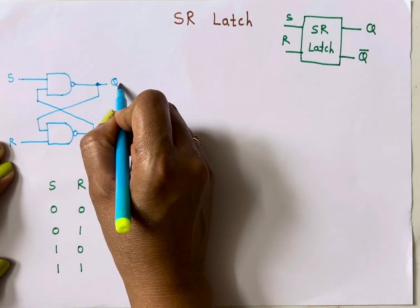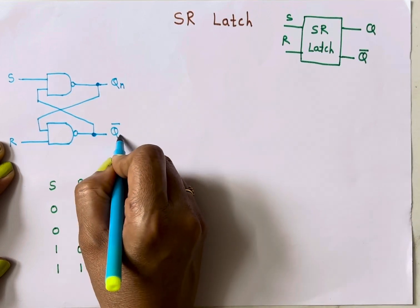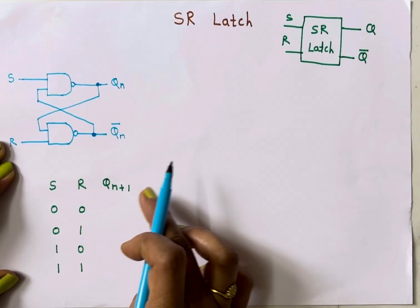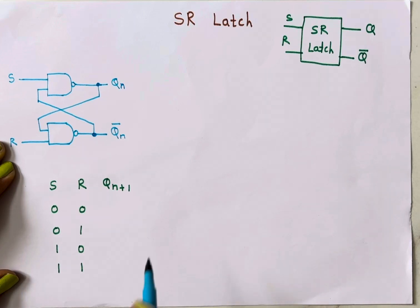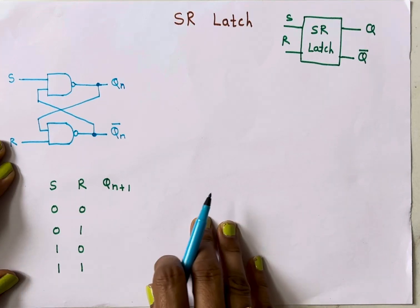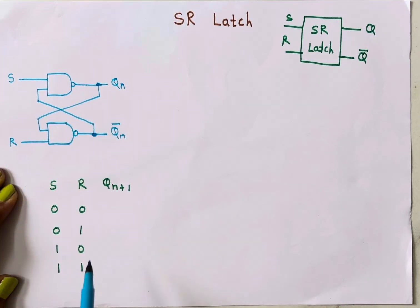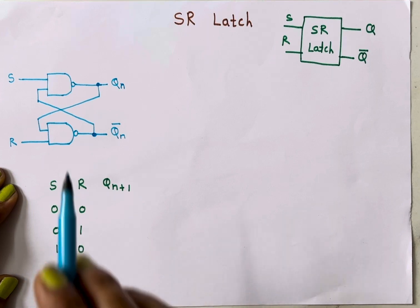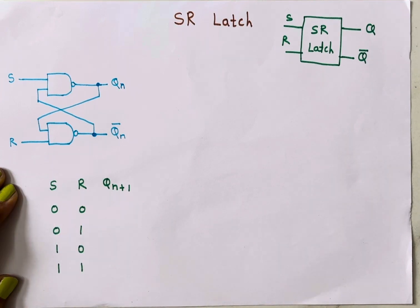The truth table has two inputs S and R, and the output Q(n+1) — the next state output. I'll also write the present state output Q(n) and Q(n)-bar, and of course Q(n+1)-bar is the complement of Q(n+1). To understand the working of this SR latch, let's first understand the truth table of the NAND gate.